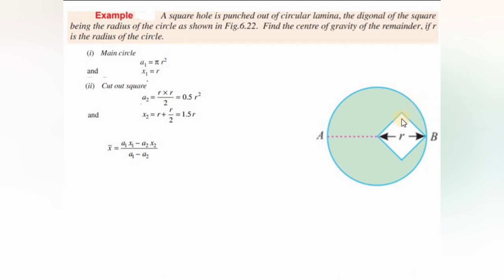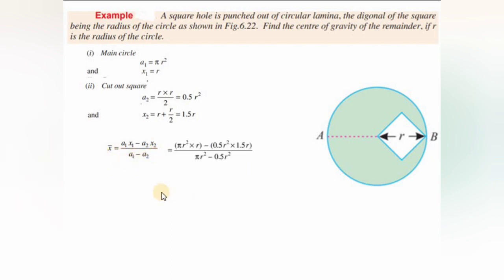Substituting the values, we get the expression and compute the resulting x̄ for the remaining figure after the square is punched from the circle.